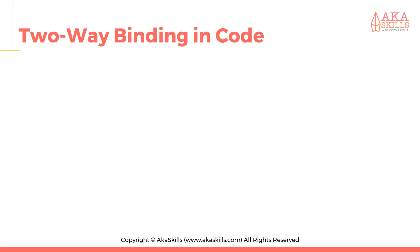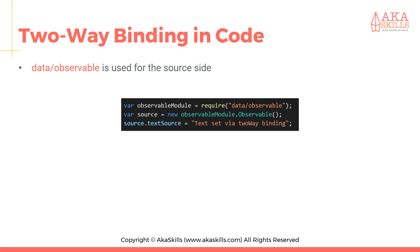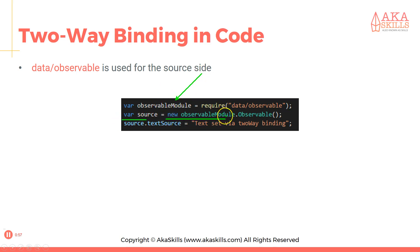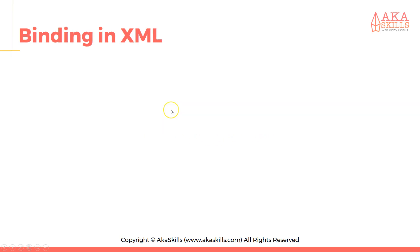Let's see two-way binding in code. We have to use the data/observable module, which is used for the source side. We import it and store it in a variable called observable module, then we say: var source = new observableModule.Observable(). Then we can set source.textSource equal to 'text set via two-way binding'.